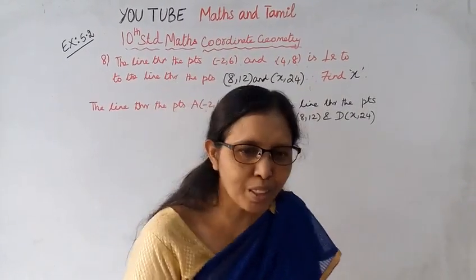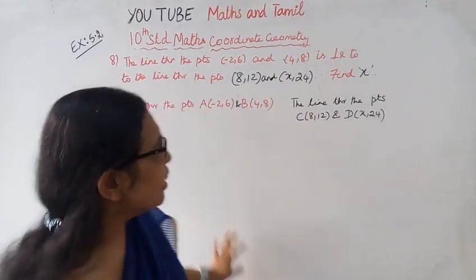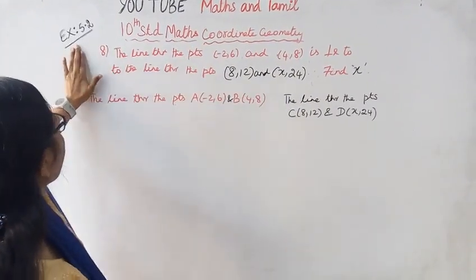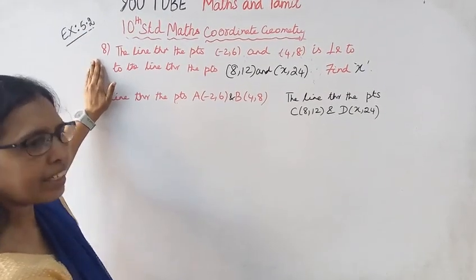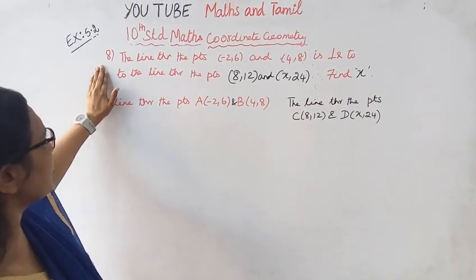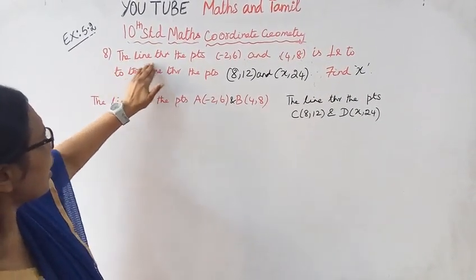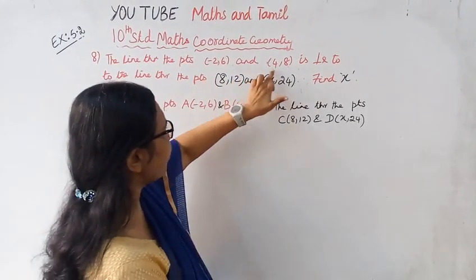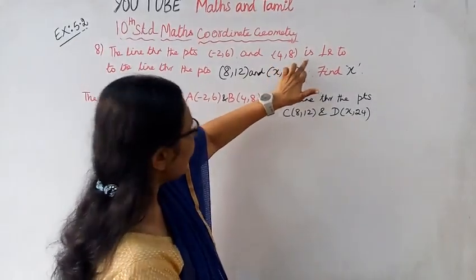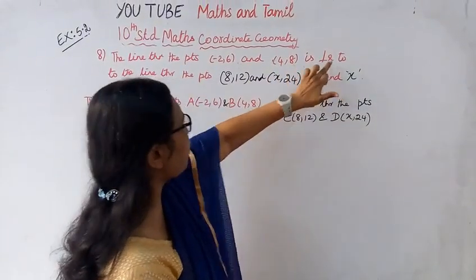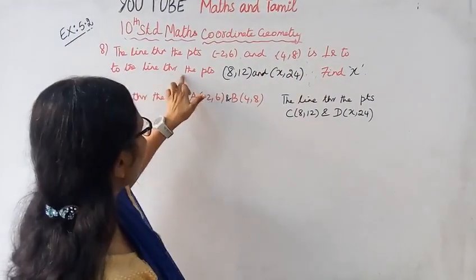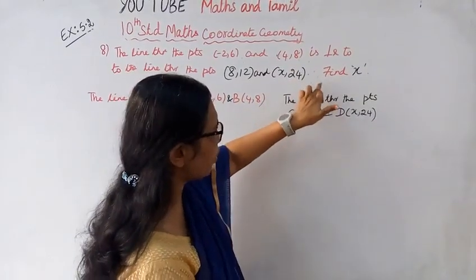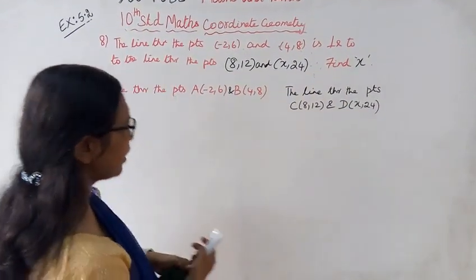Hello students, welcome to Max and Charmant channel. 10th standard coordinate geometry Exercise 5.2, 8th sum. The line through the points (-2, 6) and (4, 8) is perpendicular to the line through the points (8, 12) and (x, 24). Find x.